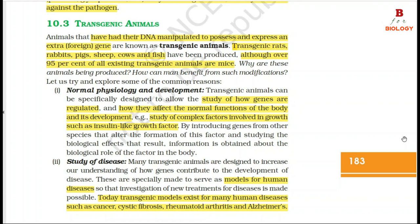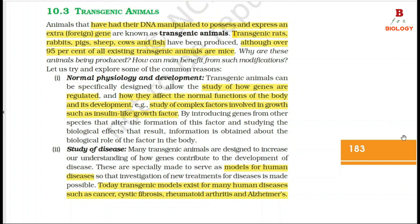2. Study of Disease: Many transgenic animals are designed to increase our understanding of how genes contribute to the development of disease. These are specially made to serve as models for human diseases so that investigation of new treatments is made possible. Today, transgenic models exist for many human diseases such as cancer, cystic fibrosis, rheumatoid arthritis and Alzheimer's.